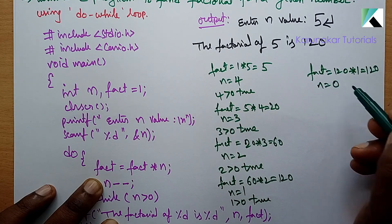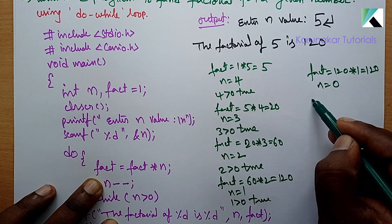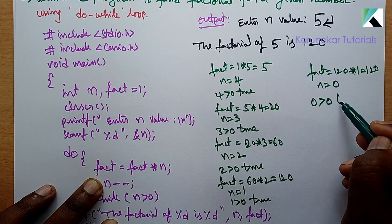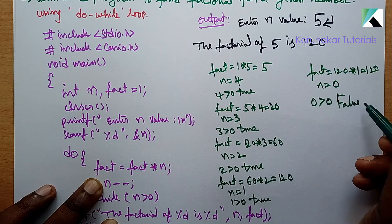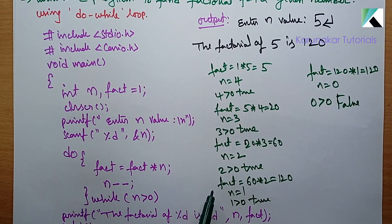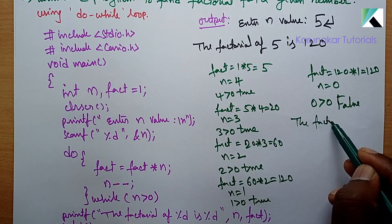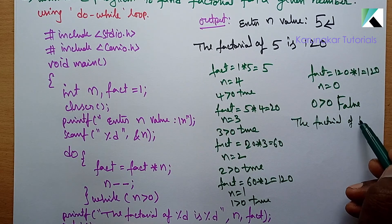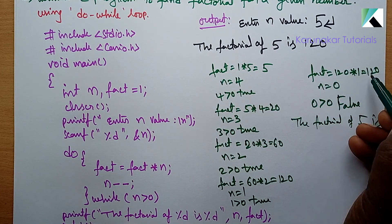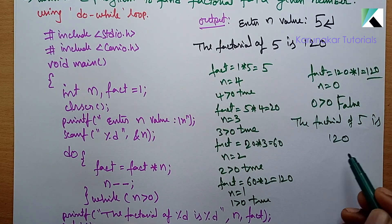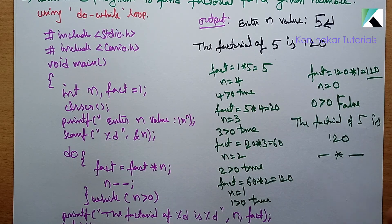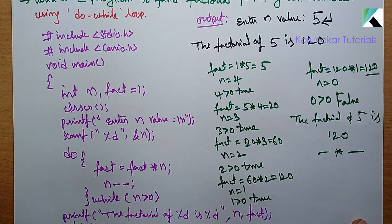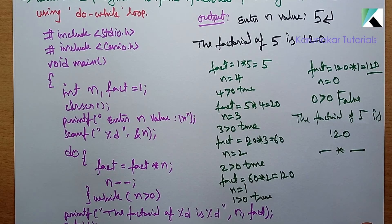Now n equals 0, after n minus minus. 0 greater than 0 — false. When the condition becomes false, the loop exits. The factorial of 5 is — the final fact value is 120. This is the answer. So this is the program to find the factorial for a given number. Thanks for watching.